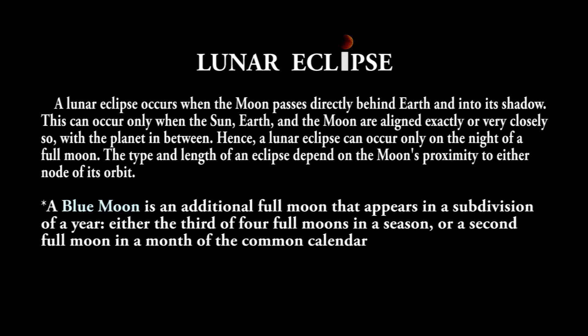A lunar eclipse occurs when the moon passes directly behind Earth and into its shadow. This can occur only when the sun, Earth, and the moon are aligned exactly or very closely so, with the planet in between. Hence, a lunar eclipse can occur only on the night of a full moon.